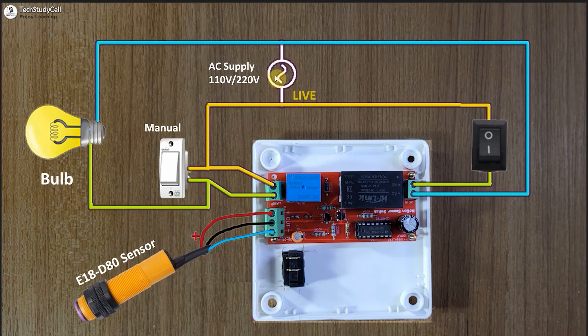In the circuit, here you can see the AC 220V supply. This switch is connected in parallel with the relay, so we can also control the light manually with this switch.